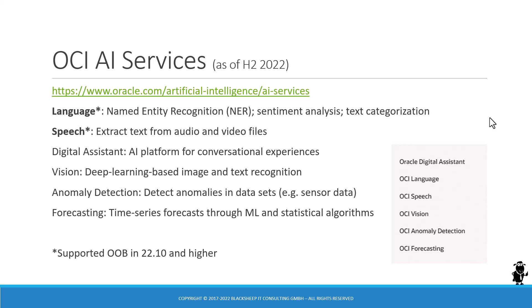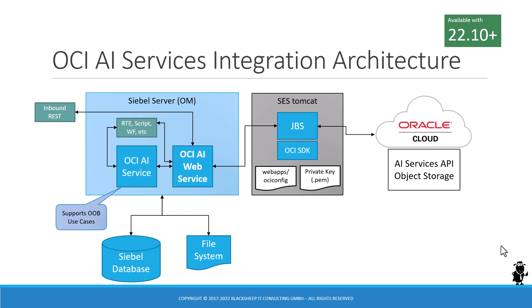Let's take a quick look at the resulting architecture of the OCI AI services integration. On the object manager in the application or EI object manager, there are two business services: the OCI AI service, which supports the out-of-the-box use cases written by Oracle and subsequently invokes the OCI AI web service. That's the main generic connector service, which can be invoked in any usual traditional way — internally as a business service or by inbound REST calls.